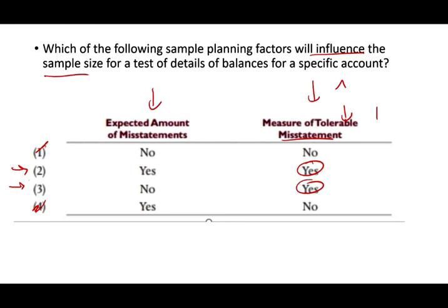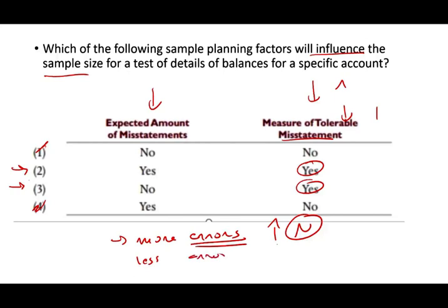The answer is either two or three. Now, expected amount of misstatement — think from a logical perspective. If you expect more mistakes, more material errors, if you're expecting this account will have more mistakes, do you change your sample size? Yes — if you expect more mistakes, you have to increase your sample size. You'll have to do more work, and how do you do more work? You select more sample. Conversely, if you're expecting fewer errors, you can lower your sample size. So does expected misstatement affect sample size? Of course it does — so yes, for both. The answer is two.